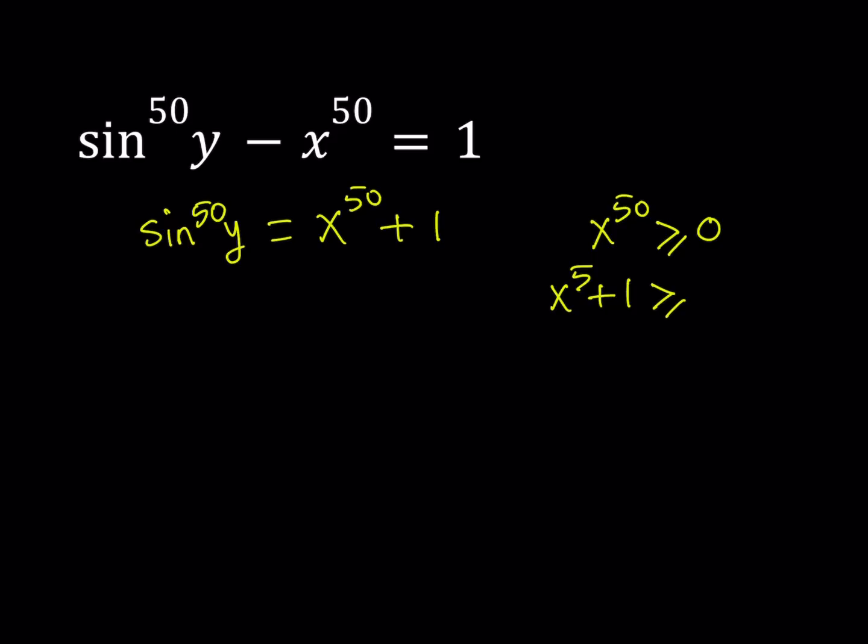By adding 1 to both sides of this inequality, you get that x to the 50th power, not the 5th, x to the power of 50 plus 1 is always greater than or equal to 1. In other words, this is going to be the minimum value for real x values. The minimum value for the right hand side is going to be 1.